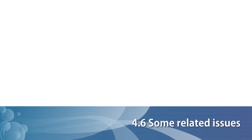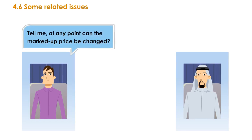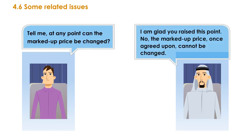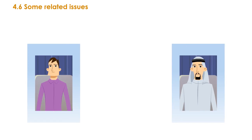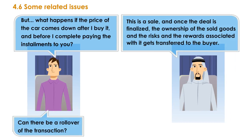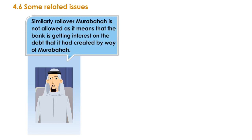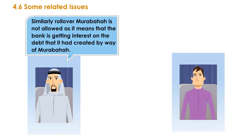Some related issues. The marked-up price, once agreed upon, cannot be changed. This is a sale, and once the deal is finalized, the ownership of the sold goods and the risks and rewards associated with it get transferred to the buyer. The seller has the right to the credit price that has been agreed upon. This is also to avoid any gharar. Similarly, rollover Murabaha is not allowed, as it means the bank is getting interest on the debt created by way of Murabaha.